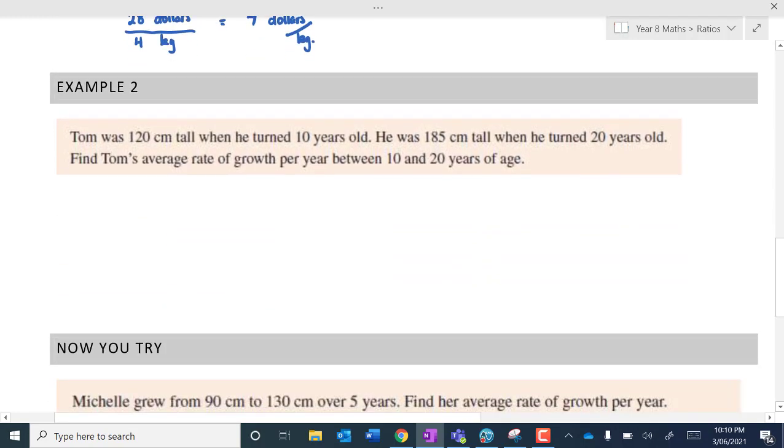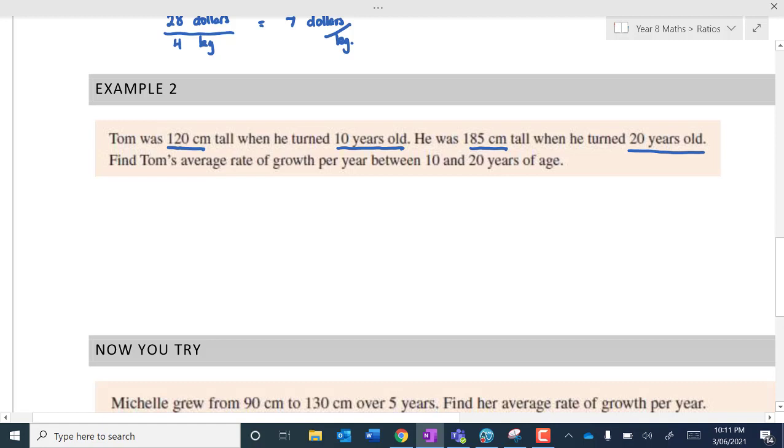Now let's have a look at this example. Tom was 120 centimetres tall when he turned 10 years old. So I'm just going to highlight some of these things. He was 185 centimetres tall when he turned 20 years old. So let's assume that Tom's average rate of growth per year is sort of the same. Let's just assume that. Probably it's technically not something that really would work out like this, but let's just simplify it. Let's do that. So let's have a look. We're looking for the rate. So what rate are we after? Well, growth per year. So we're looking at centimetres per year. Okay, so that's what we're going to do to identify. What rate are we looking at?